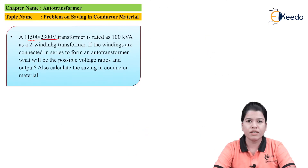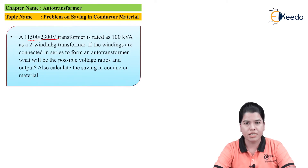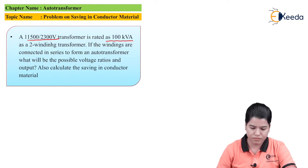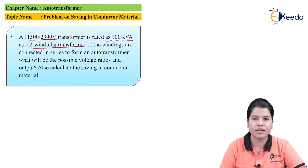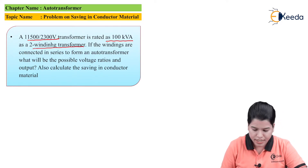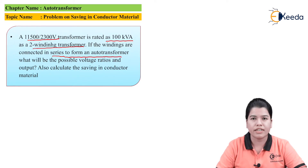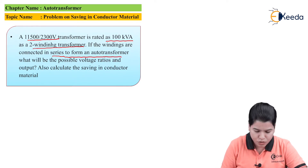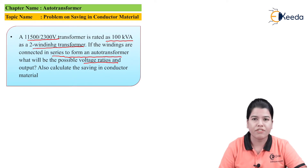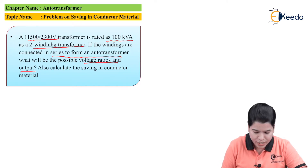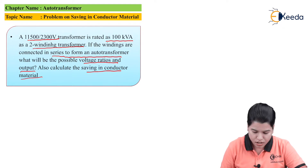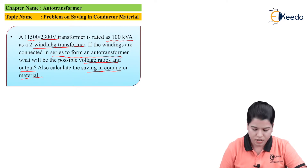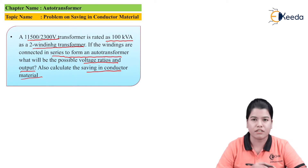The problem on saving in conductor material can be stated as: an 11,500 by 2,300 volt transformer is rated as 100 kVA as a two winding transformer. If the windings are connected in series to form an auto transformer, what will be the possible voltage ratio and output? Also calculate the saving in conductor material.